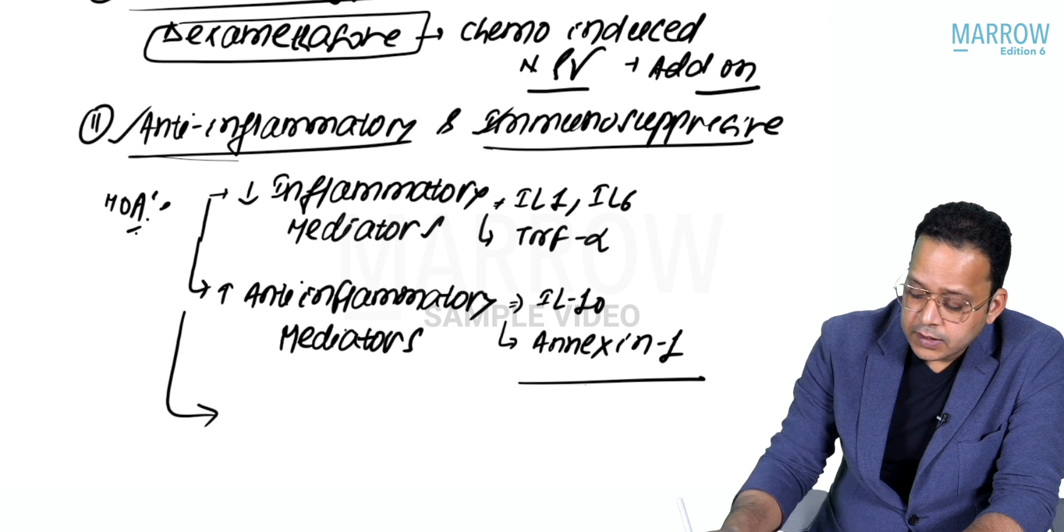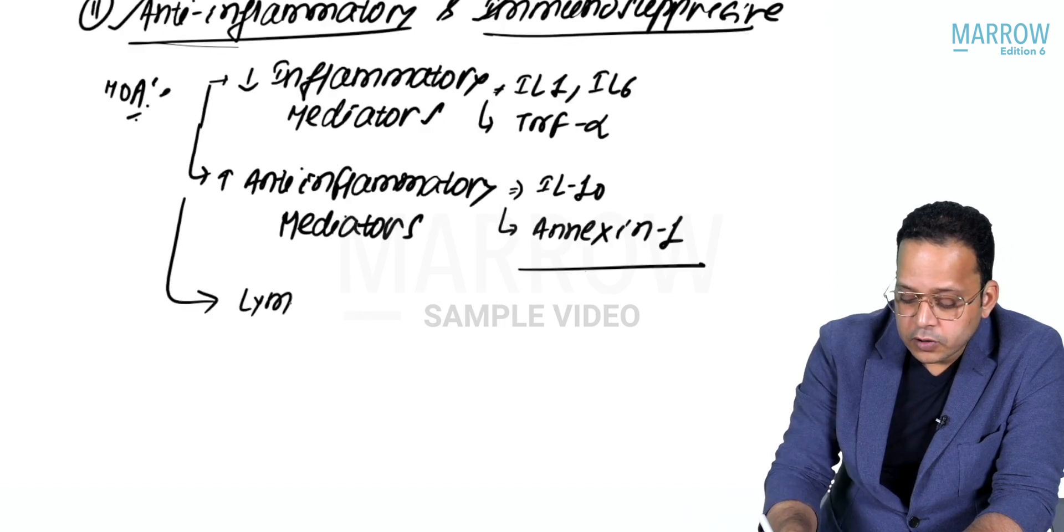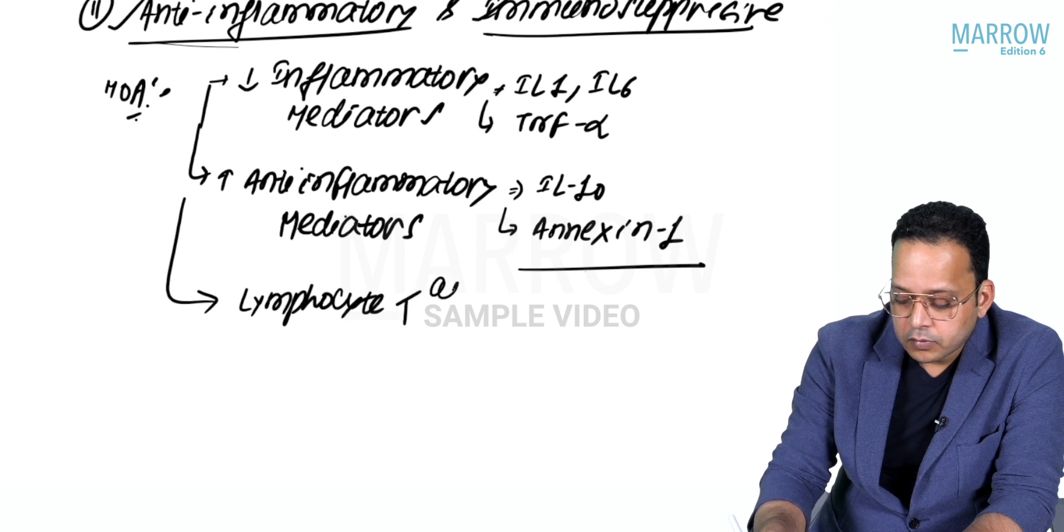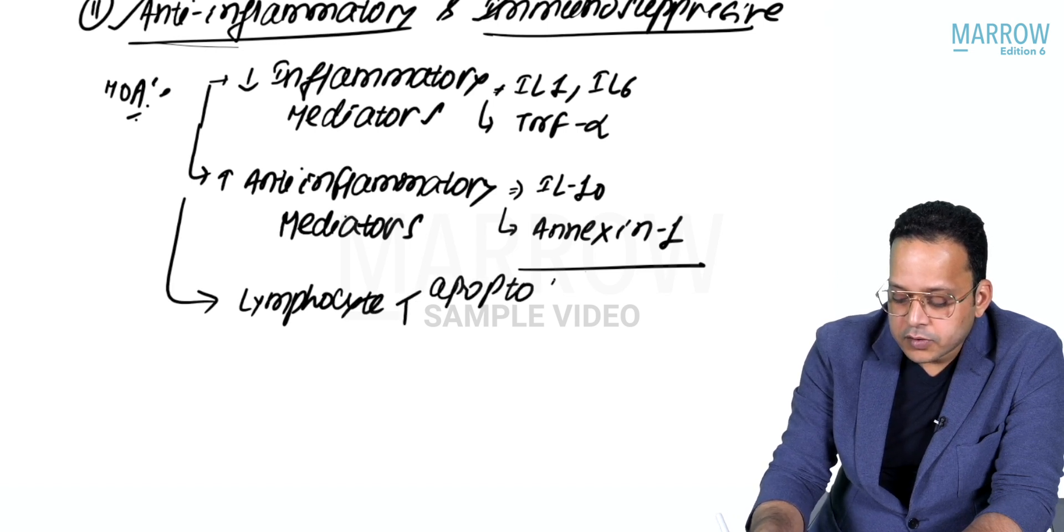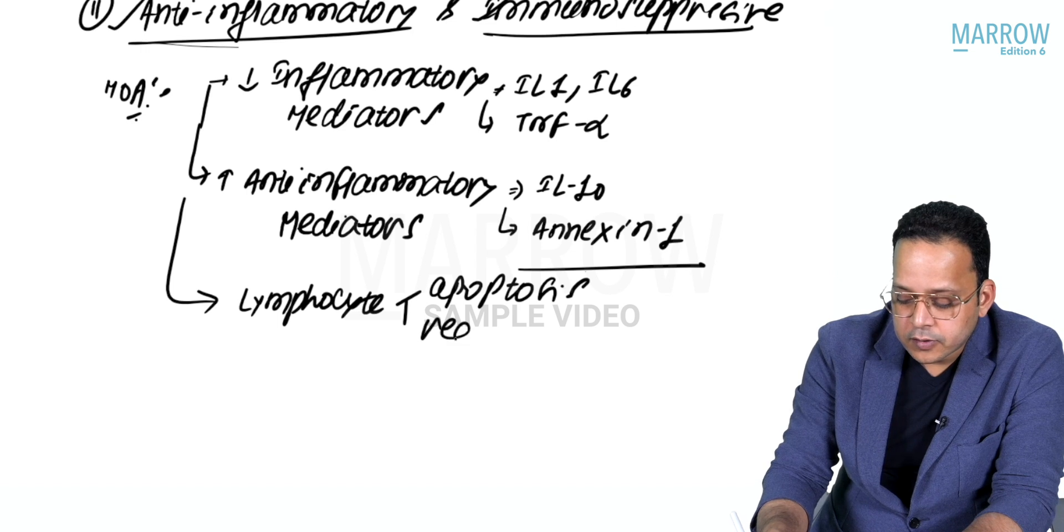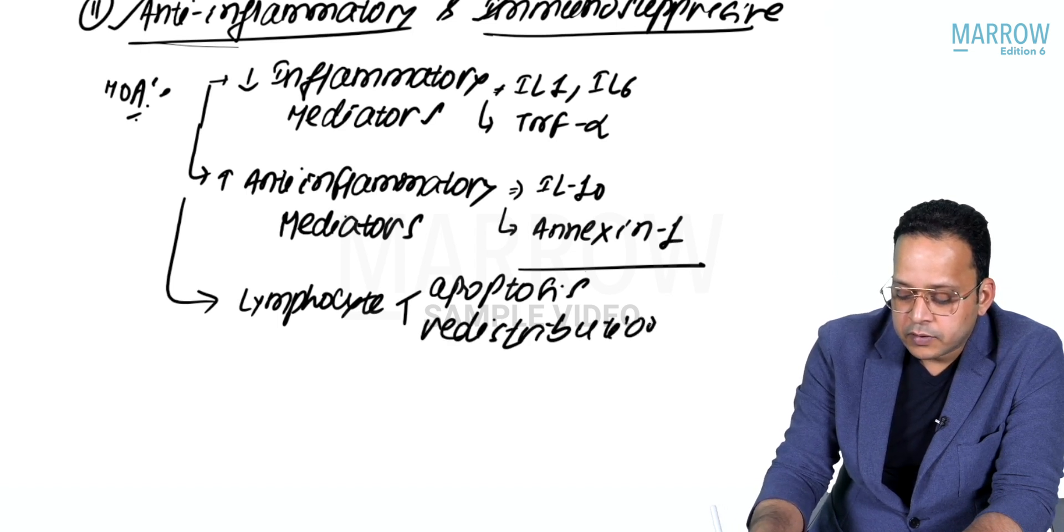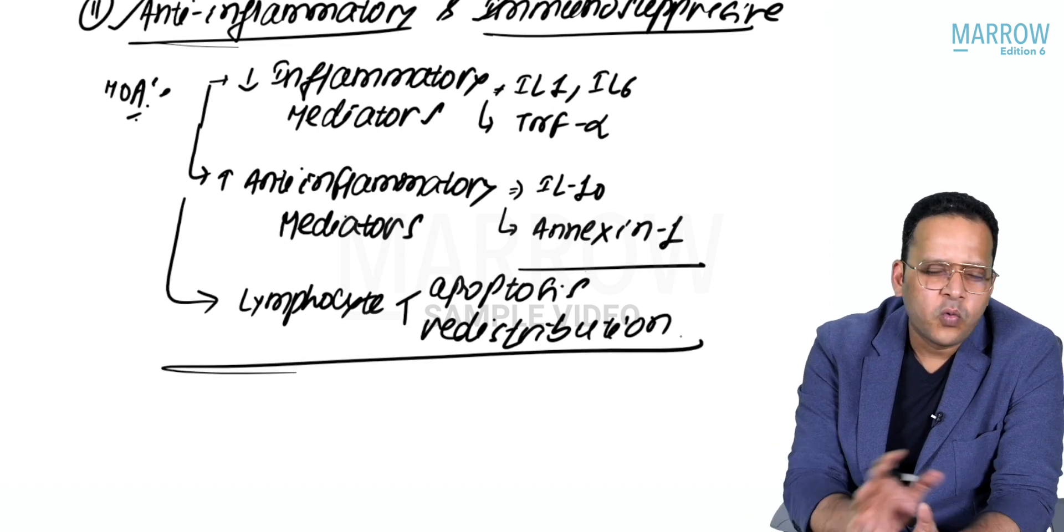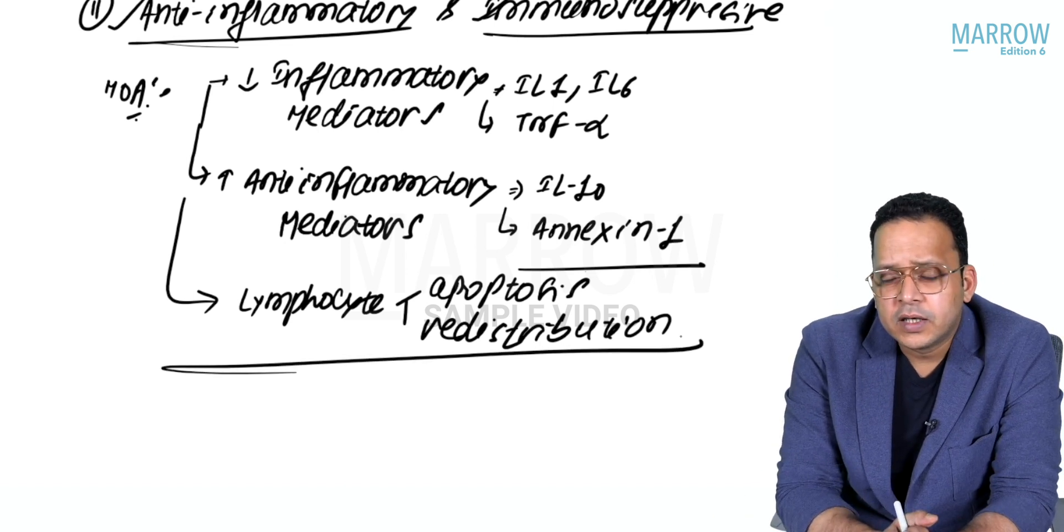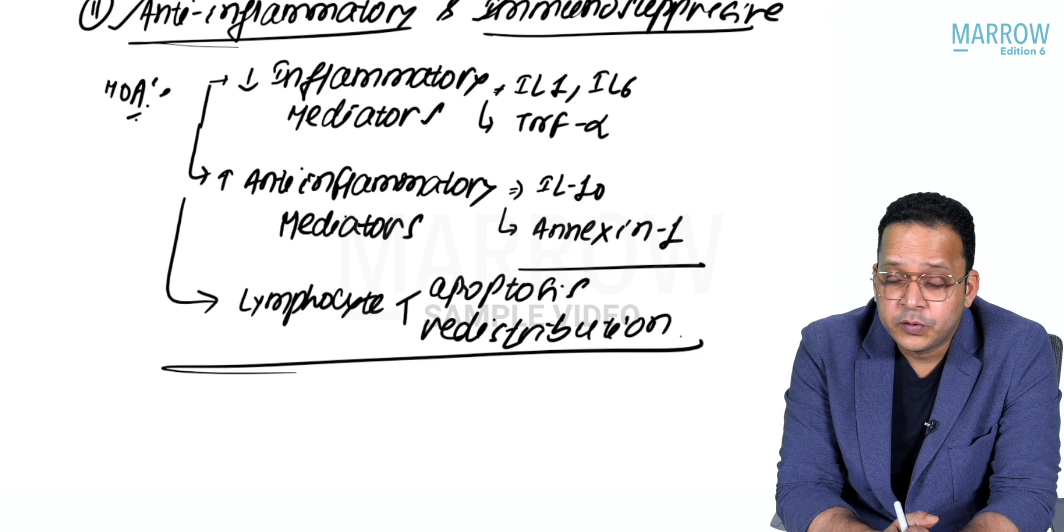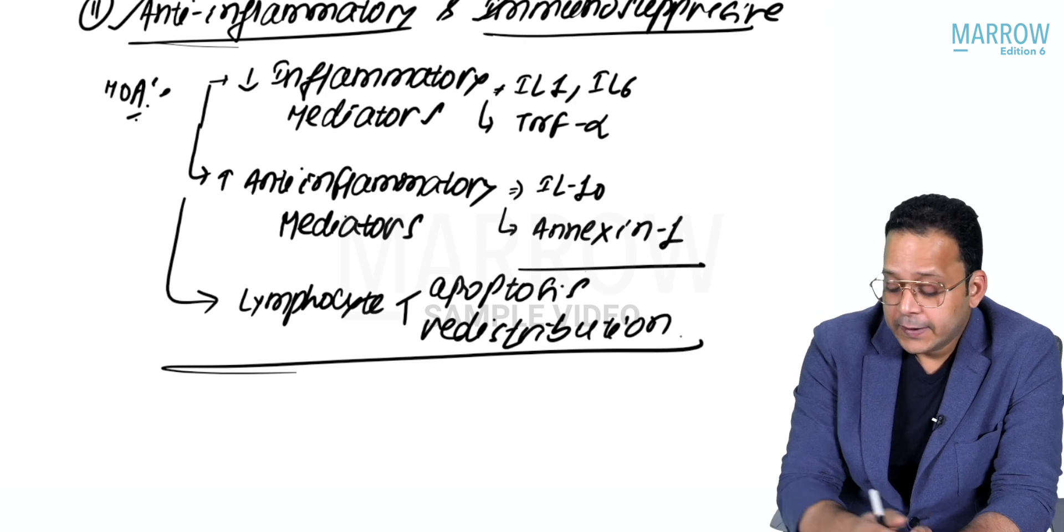Apart from this, steroids also induce lymphocyte apoptosis directly as well as redistribution from the site of inflammation. Steroids have a wide range of action - multiple actions in our body, and that is why they are so beneficial if used appropriately.